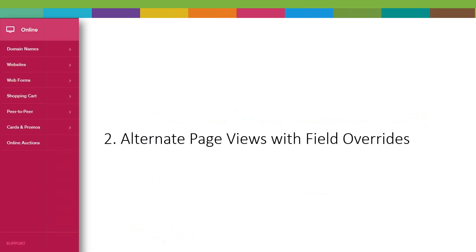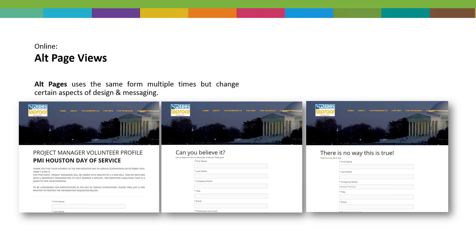Next is alternate page views with field overrides. Alternate page views is something we've had in the system for a while — field overrides is the new component. Not everybody is using alternate page views the way they could, so I want to briefly explain what it is. Alternate page views allows you to use the same form multiple times but change certain aspects of design and messaging. For example, one of our clients — the Project Management Day of Service done in conjunction with Taproot — has a form for a Houston event, and they can show it with different messaging using alternate page views.